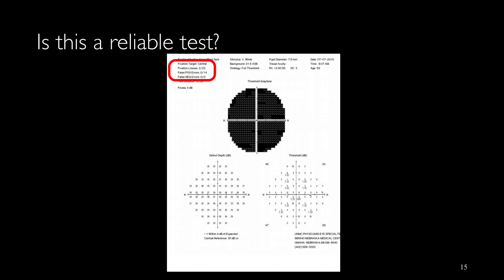Is this test reliable? Based on the reliability indices that we have at the top box it looks reliable, but if you look at the gaze graph it shows a lot of fixation losses that makes this visual field unreliable.